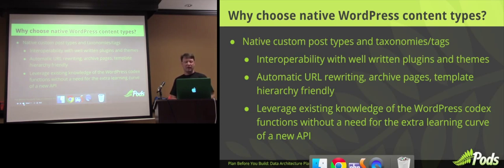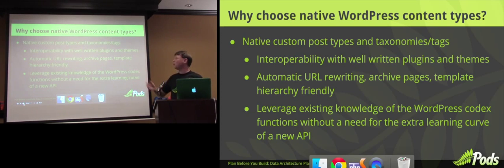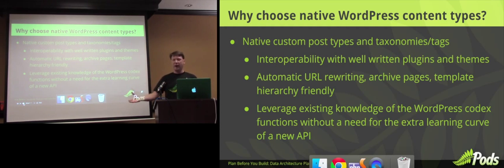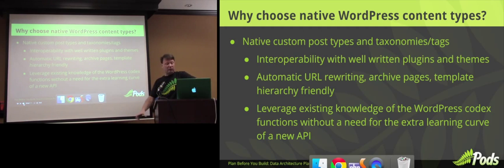With native custom post types and taxonomies, you get interoperability with well-written plugins and themes. You get all the advantages of the automatic URL rewriting, the archive pages, the template hierarchy — it just knows about your custom post types. It knows where the archive page should be and where each single page can be. You don't have to do anything special for it, and you and any programmers working on the site can leverage your existing WordPress knowledge without having to learn a new API.